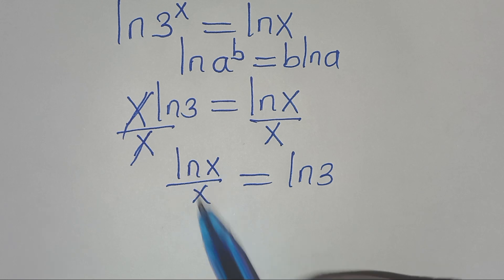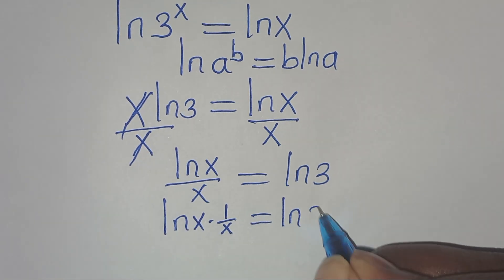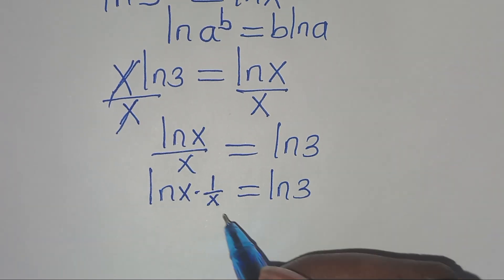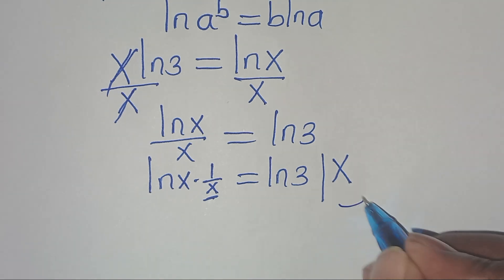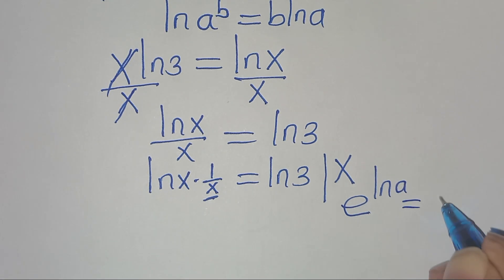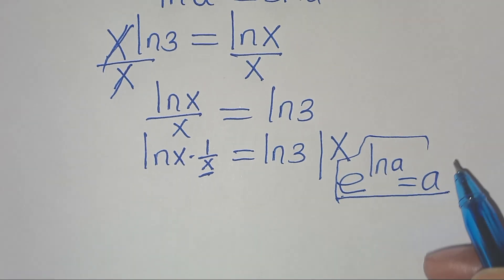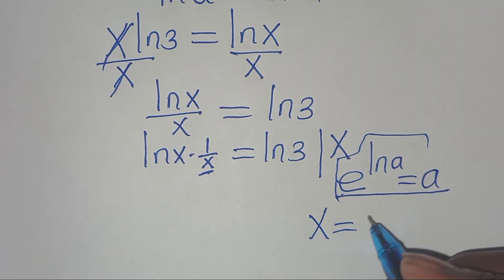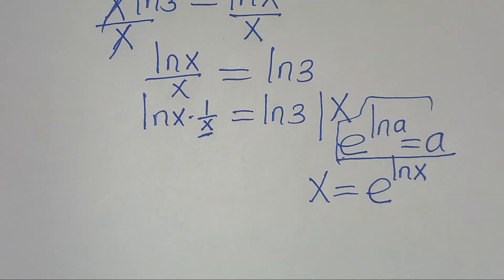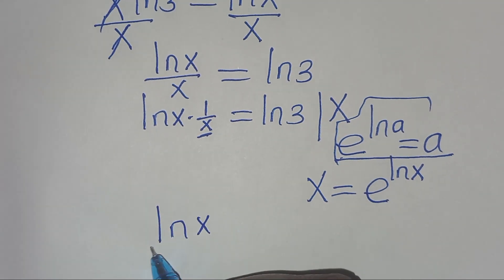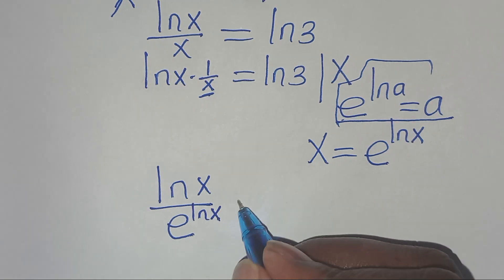From here, we can write this as ln(x) times 1/x, this is equal to ln(3). Now, we can express x in terms of the exponent, given that e to the power of ln(a) equals a, so x equals e to the power of ln(x). Substituting this, we have ln(x) divided by e to the power of ln(x), this is equal to ln(3).